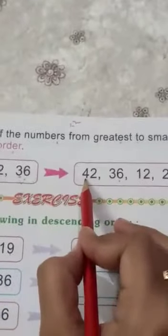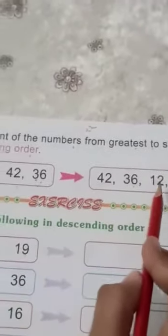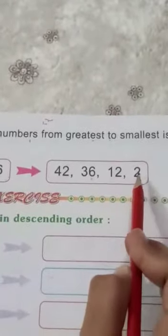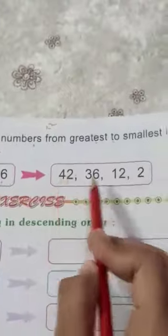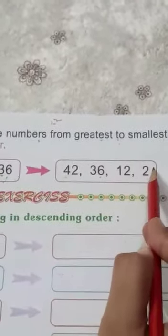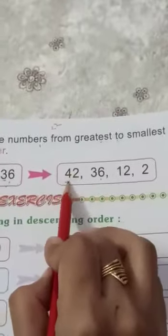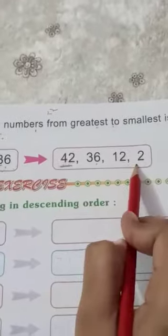First of all, we will write greatest number 42, then 36, then 12, and sabse last mein kya aayega? Number 2, because 42 is greatest number and 2 is smallest number. Ismein kya aapne kya dekha? Ismein sabse aage kya hai? Greatest number, sabse bada number, aur sabse last mein sabse chota number.